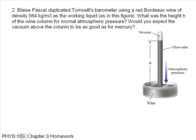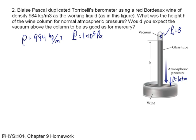Blaise Pascal duplicated Torricelli's barometer using a red Bordeaux wine of density 984 kilograms per cubic meter. As the working liquid as in this figure, what was the height h of the wine column for normal atmospheric pressure? So that means that I have a pressure here pushing down, and I'll call this p. This is equal to 1 atmosphere, or 1 times 10 to the fifth pascals. And then the pressure inside here is my p-naught, and it's equal to zero because it's a vacuum. So I start with my pressure equation, p is equal to p-naught plus rho gh. p-naught is zero.